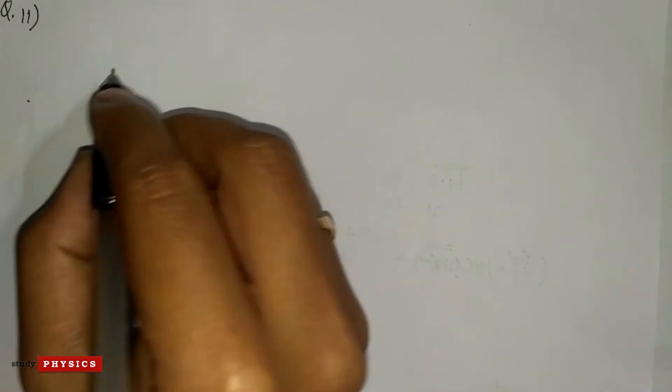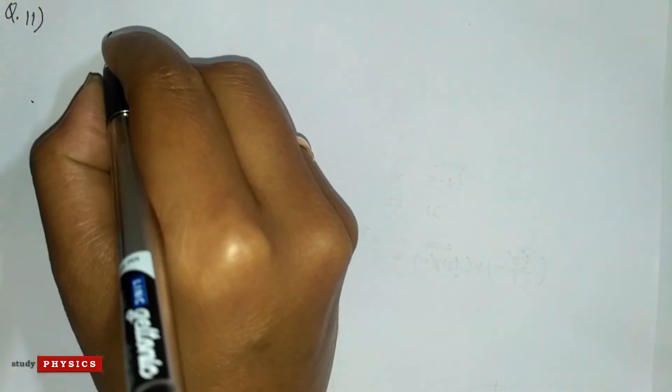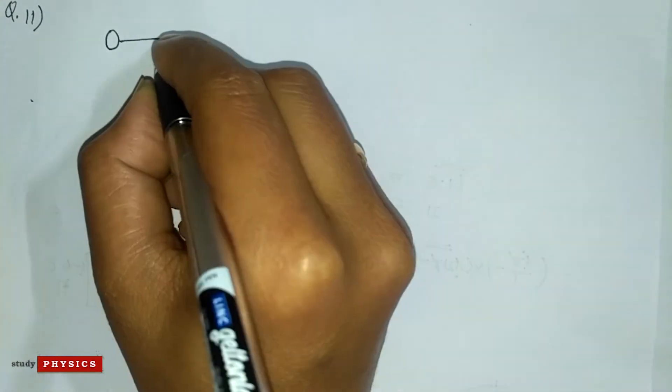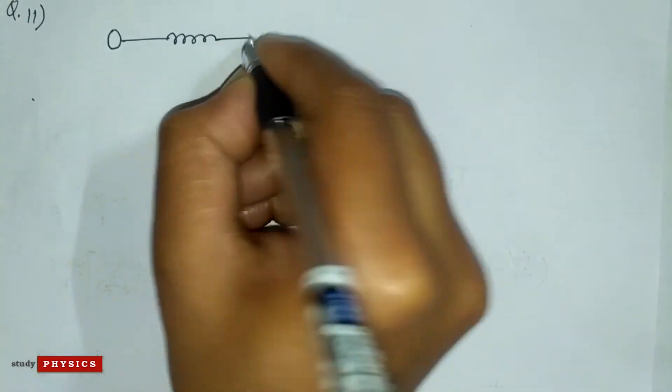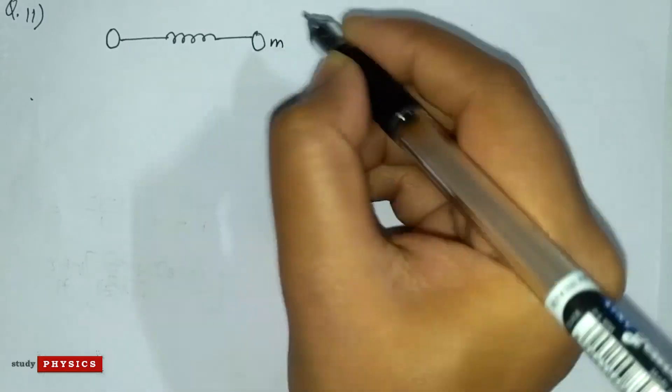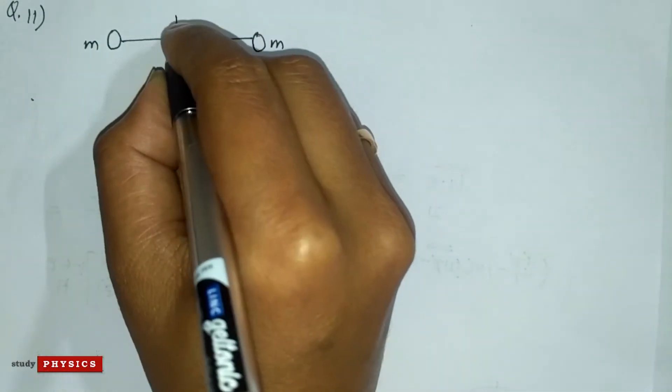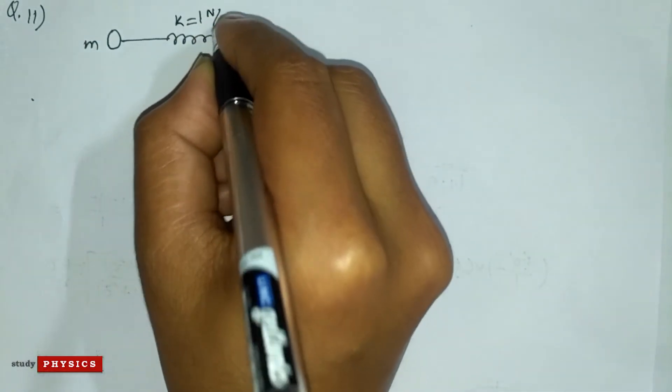Okay, so two identical masses are connected with this massless spring. So this is m, this is m, and this is k equals 1 Newton per meter.